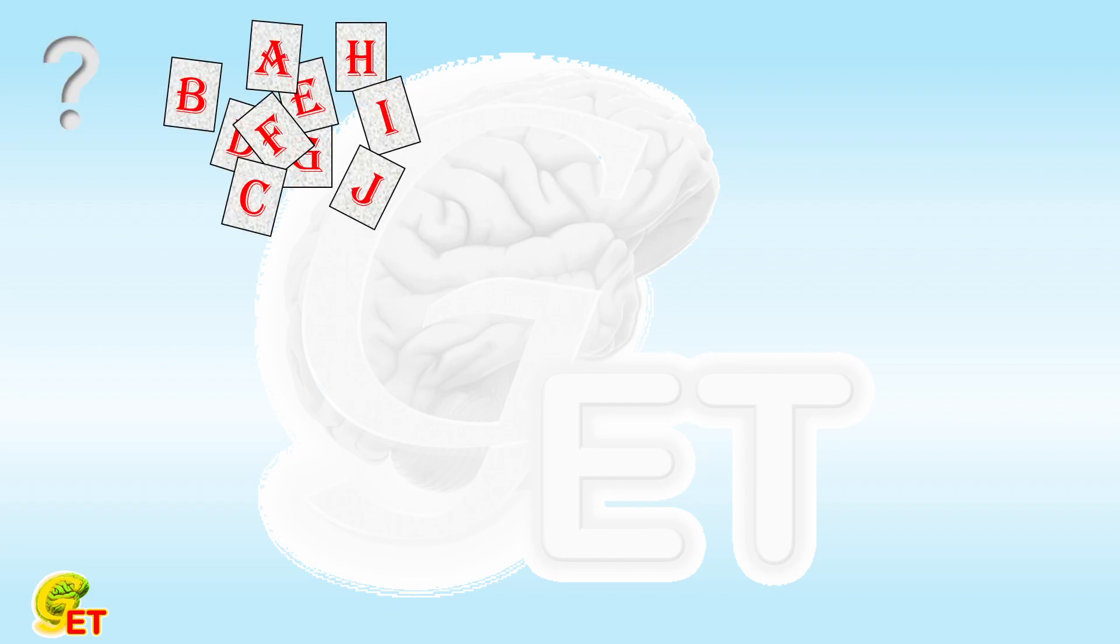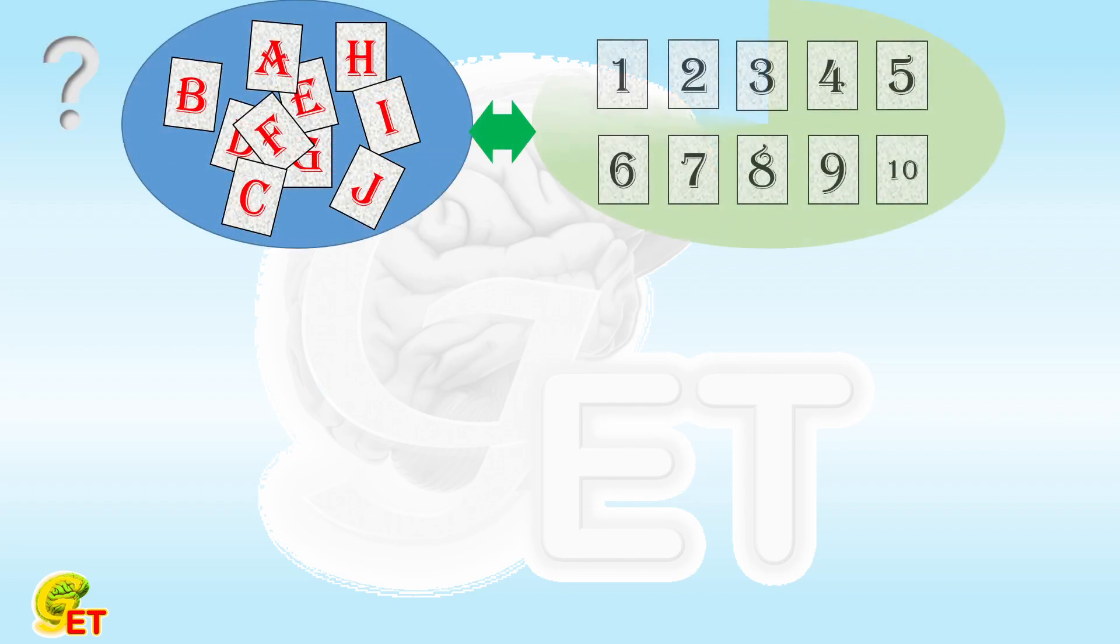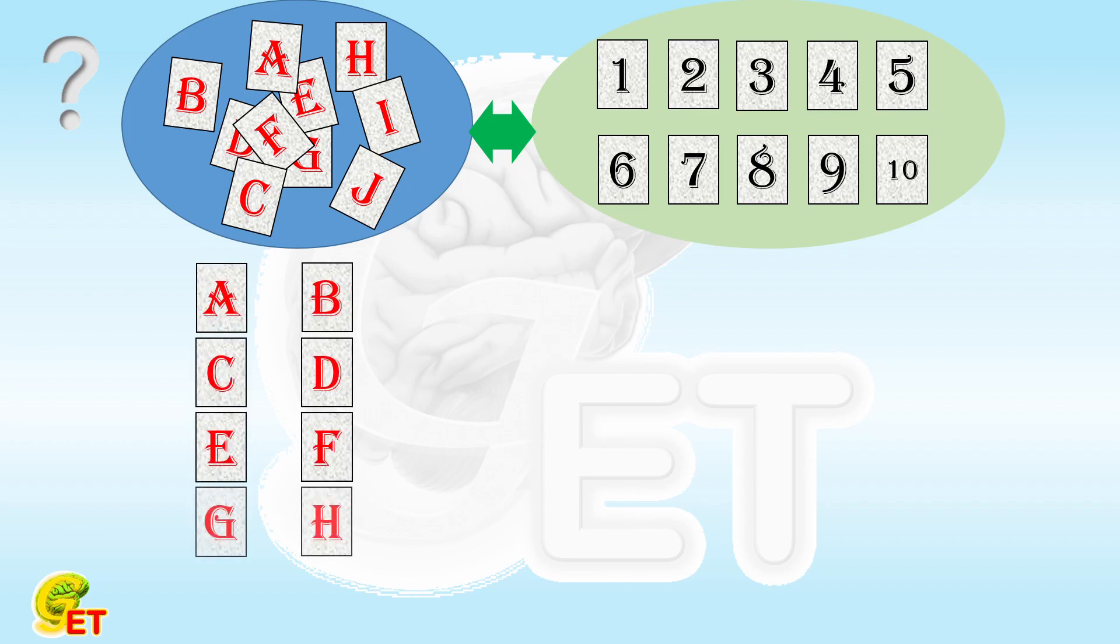There are 10 cards with the 10 numbers from 1 to 10 written on their backs. Each number appears exactly once. There are 5 people. Each one draws 2 cards and adds the numbers on the backs together to get 17, 16, 11, 7, and 4 respectively.